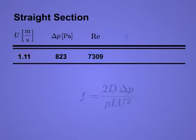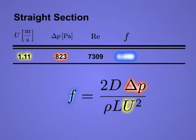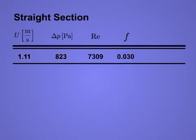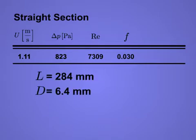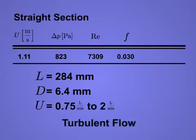Combine your results with the Darcy friction factor formula and your measurements of the test section to solve for the friction factor. For a straight section of length 284 mm and inner diameter of 6.4 mm, the measured flow rates from three-quarters to 2 liters per minute correspond to turbulent conditions.